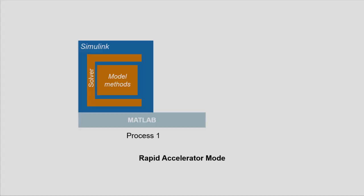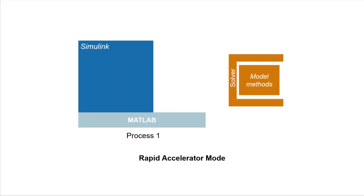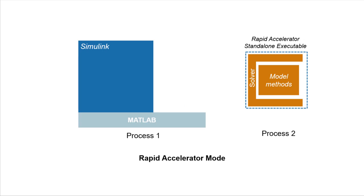The rapid accelerator mode compiles the whole model into a standalone executable which resides outside of MATLAB and Simulink, running in its own process. It then communicates with Simulink when the model runs. While building the executable takes time, the runtime overhead is much lower with the whole model compiled. Furthermore, if you don't change the model structure, recompilation is skipped when you rerun the model, saving you time for multiple simulations.